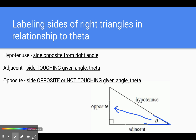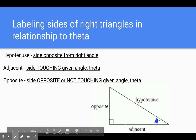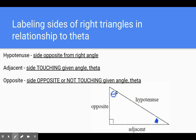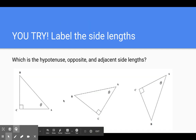Notice theta can change places. So if we crossed that out and this was theta instead, then this side would be the opposite and this side would be the adjacent. The hypotenuse is still the hypotenuse. So know that when theta changes, it can change your opposite and adjacent sides.